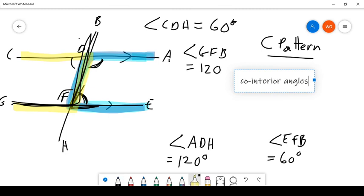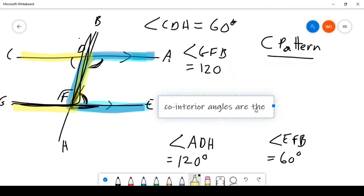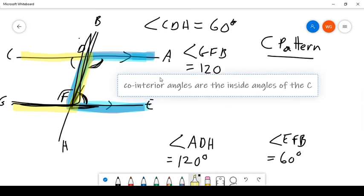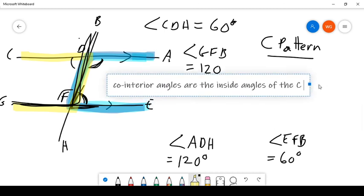So write that in as our final conclusion, co-interior angles, i.e., in other words, the inside part of the C pattern. So co-interior angles are the, move this over so we can see it, that's really important, inside angles of the C. All right? And they must add up to 180. They always add up to 180 degrees.